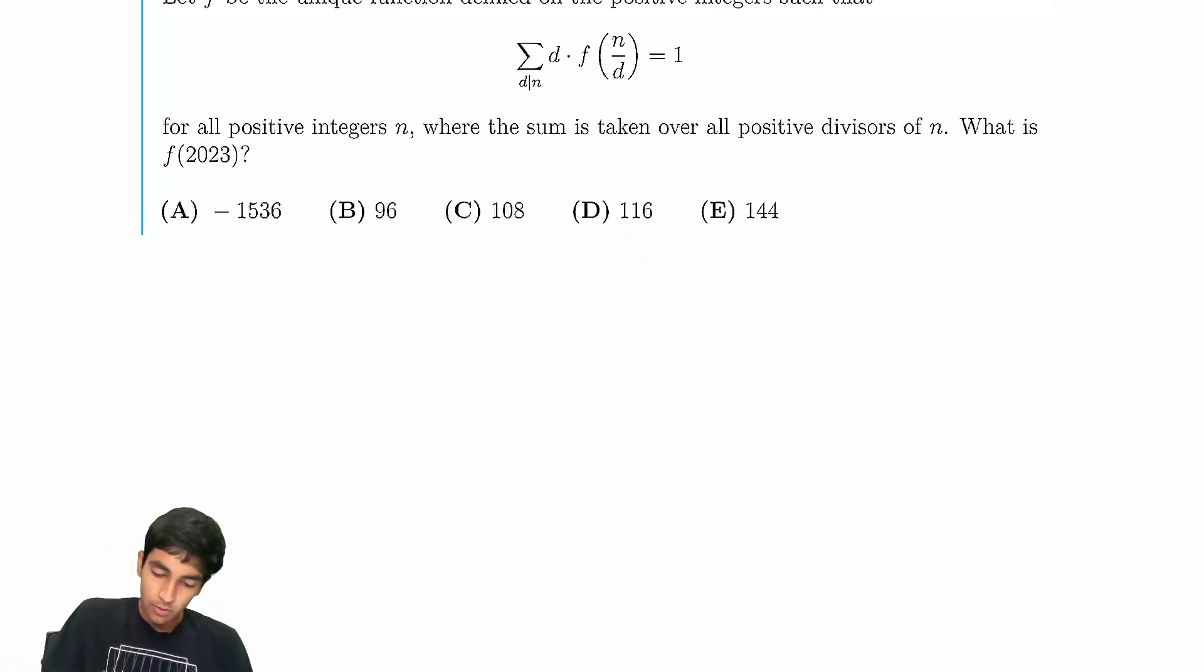So the first thing to notice here is, what happens when n is 1 in this function? We just have 1 times f of 1 equals 1, i.e. f of 1 is 1.